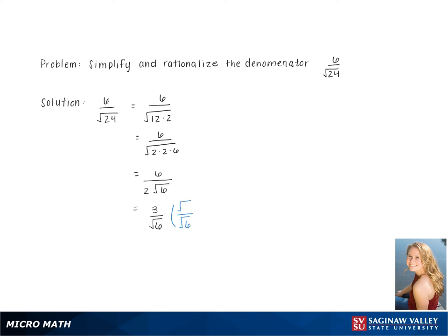Now we rationalize the denominator. We multiply both top and bottom of the fraction by square root 6. This gives us 3 square root 6 over square root of 6 times 6.